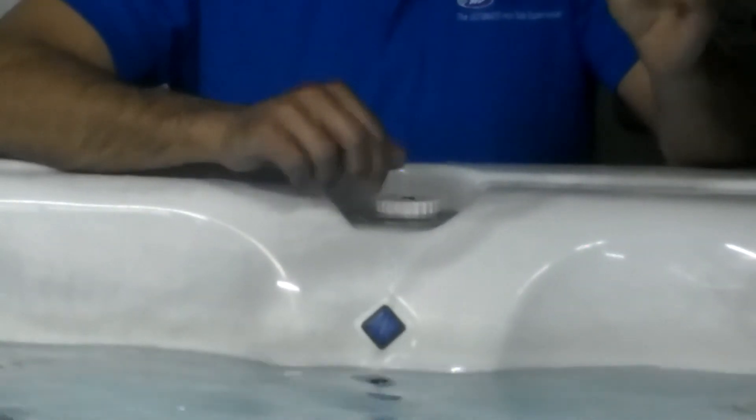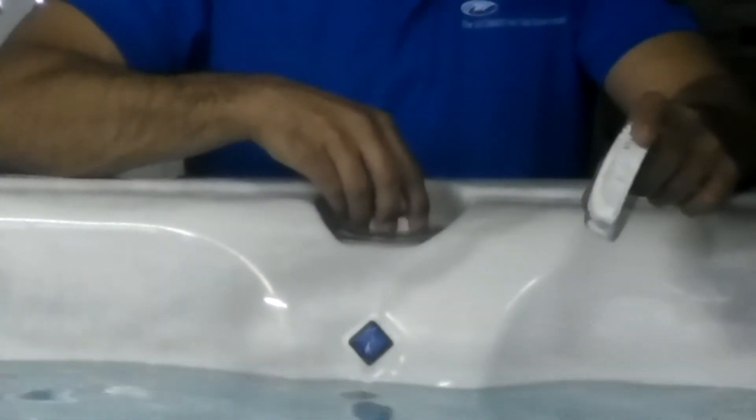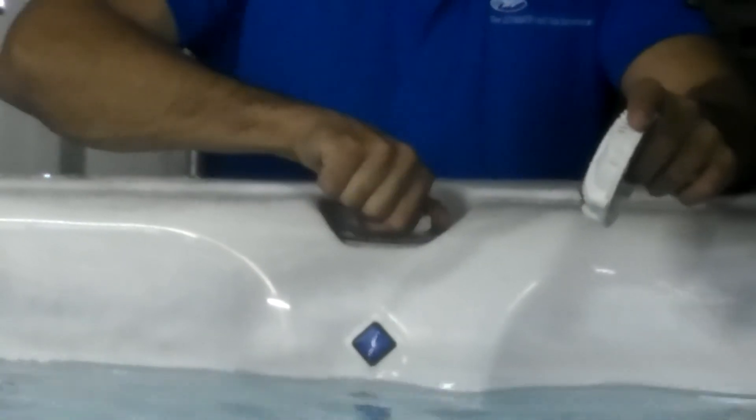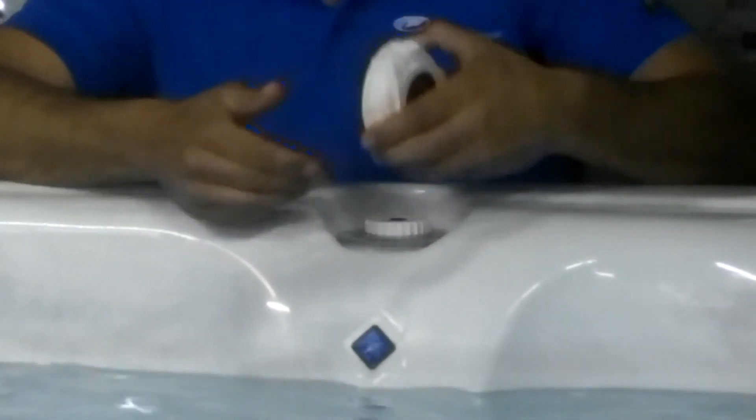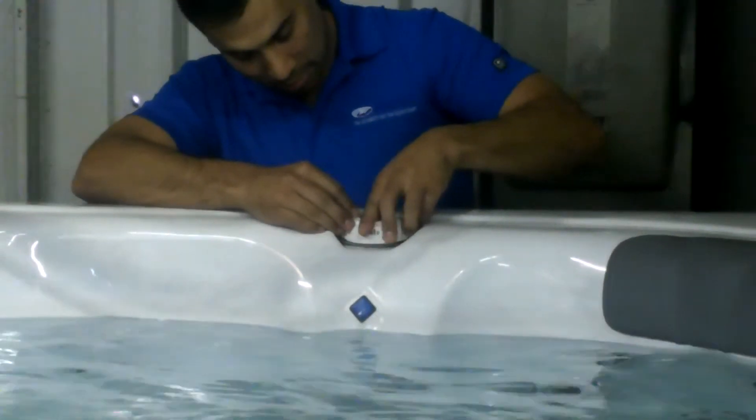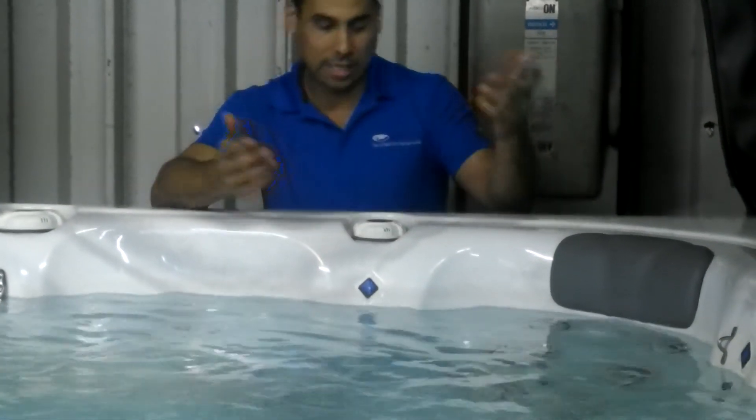All you're going to do is take off the top like you saw there, and then we're going to twist this valve tight until no more water is running through. Then we're just going to pop this right back on and then you're done. That simple.